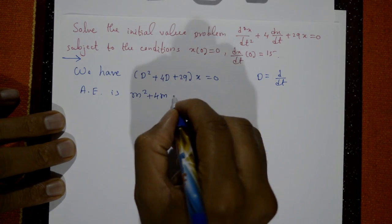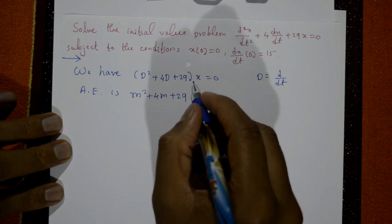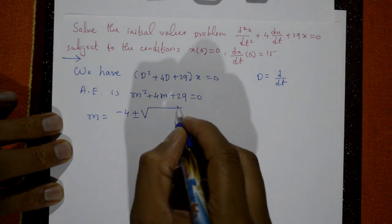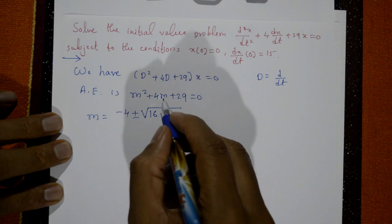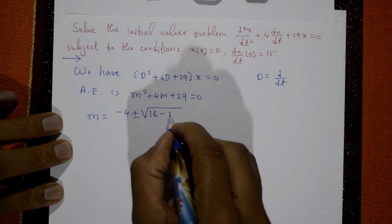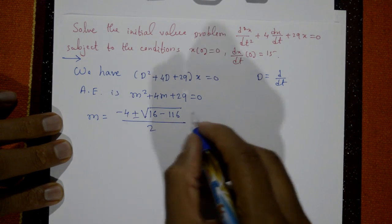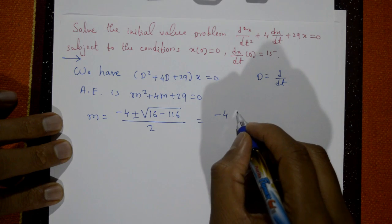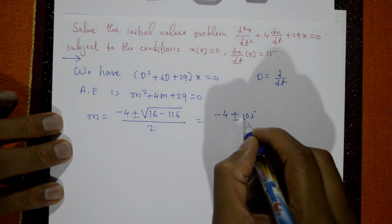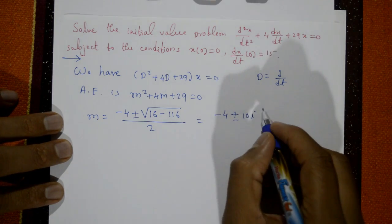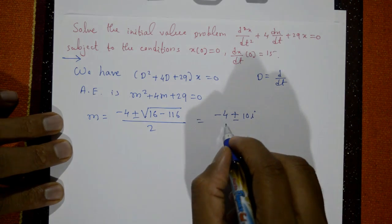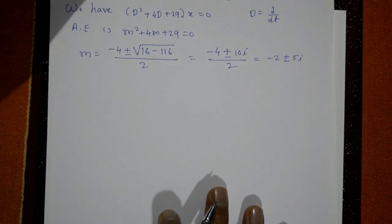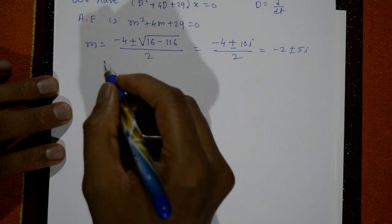The auxiliary equation is m² + 4m + 29 = 0. Using the quadratic formula: m = (−4 ± √(16 - 4·1·29)) / 2 = (−4 ± √(16 - 116)) / 2 = (−4 ± √(−100)) / 2 = (−4 ± 10i) / 2 = −2 ± 5i.